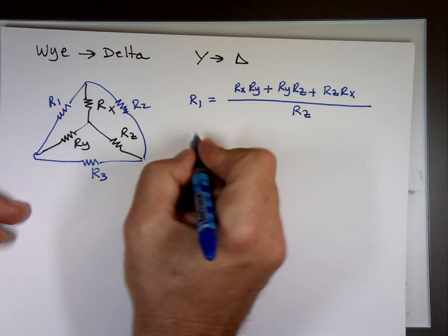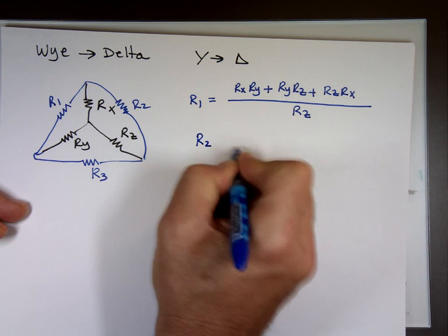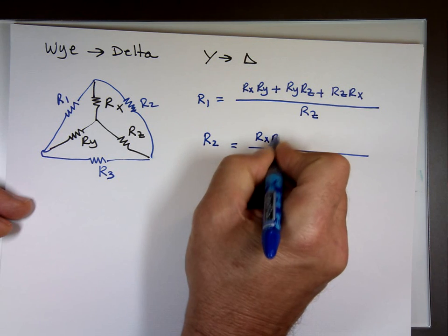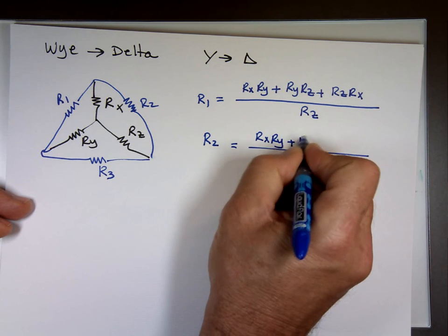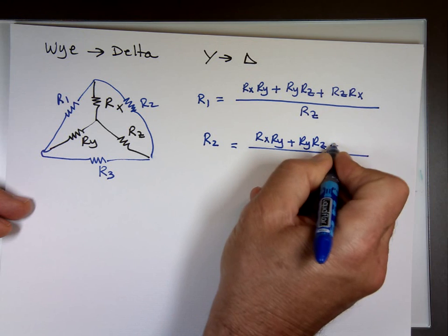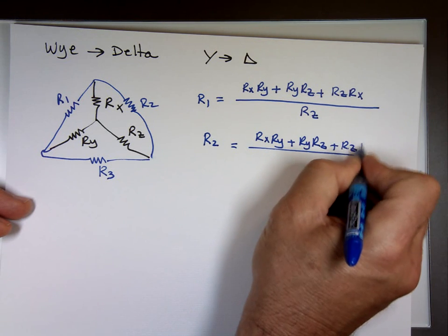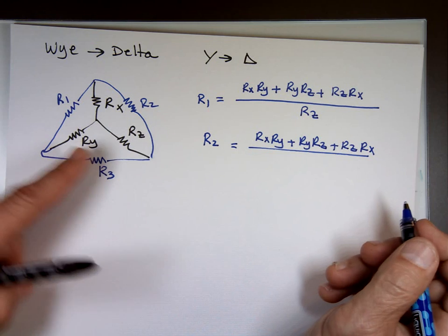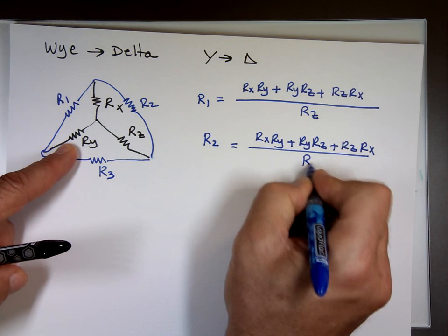If I'm looking for R sub 2, the top is going to be the same. And I'm looking for R sub 2. The resistor opposite to R sub 2 is R sub Y.